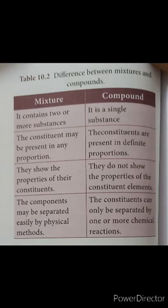Mixtures are further classified into two types: homogeneous mixtures and heterogeneous mixtures. A homogeneous mixture is one in which the components cannot be seen separately. For example, salt solution — if you take one teaspoon of salt and dissolve it in a tumbler of water, that is an example of a homogeneous mixture. It has a uniform composition and every part of the mixture has the same property.